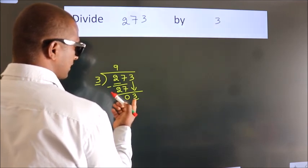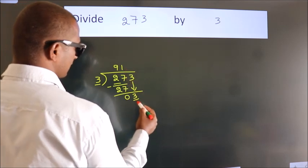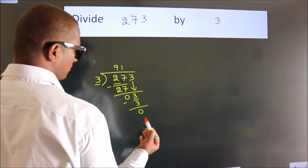When do we get 3? In 3 table. 3 ones, 3. Now, we subtract. We get 0.